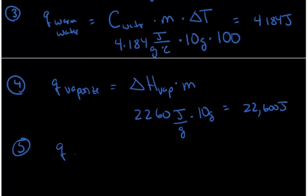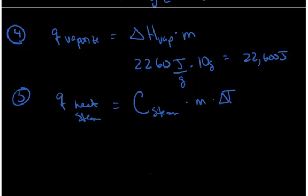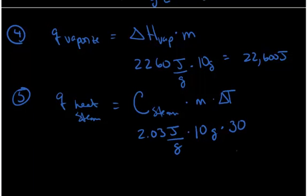For step five, to heat the steam, the heat equals the specific heat of steam times mass times change in temperature. The heat capacity of steam is 2.03 joules per gram per degree Celsius. We still have 10 grams of water, and the change in temperature is 30 degrees because we're going up to 130 degrees Celsius. That equals 609 joules.